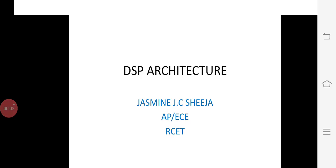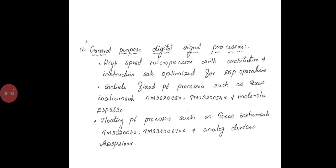Let us see about DSP architecture. While we are seeing the general purpose DSP architecture, it is a high speed microprocessor with architecture and instruction sets optimized for DSP operations. It includes the fixed point processors such as Texas Instruments C5X series and Motorola, and also Texas Instruments C54 and C67 and analog devices.